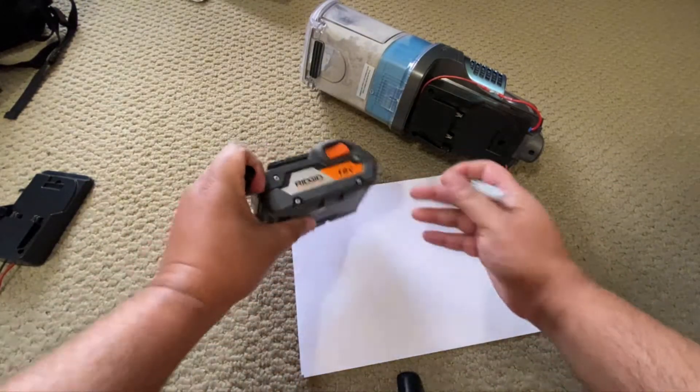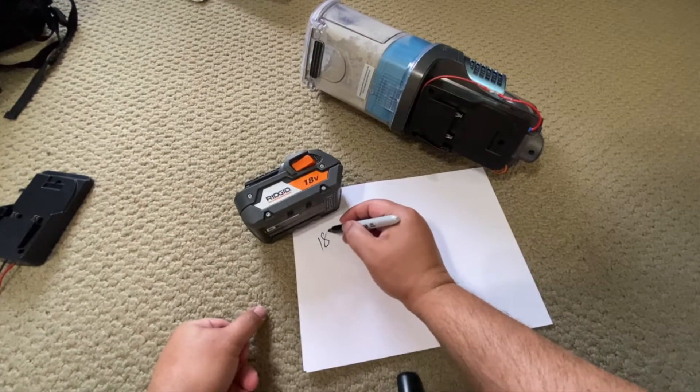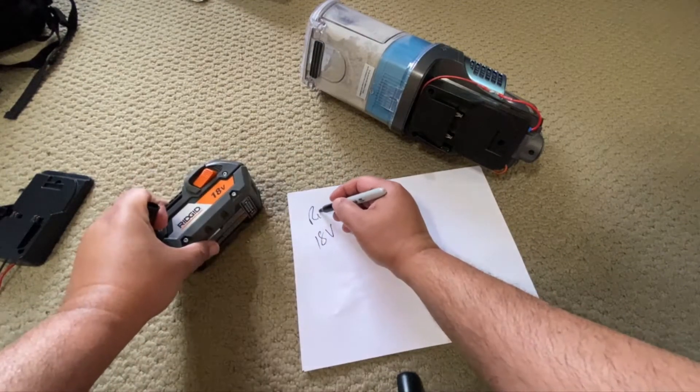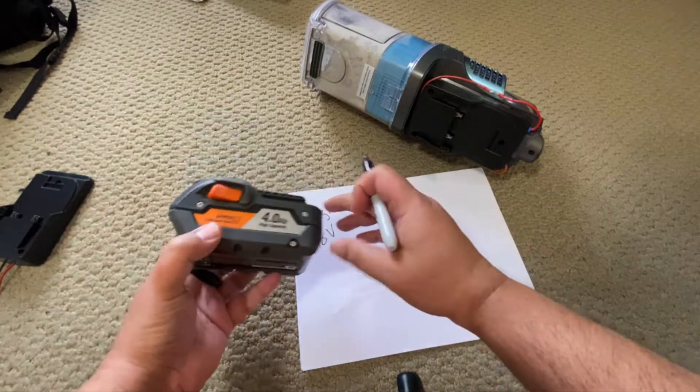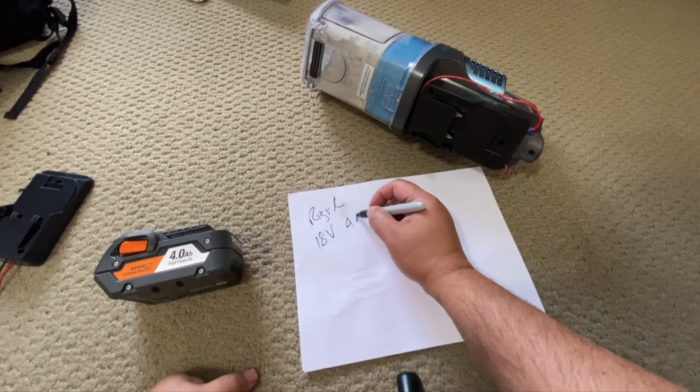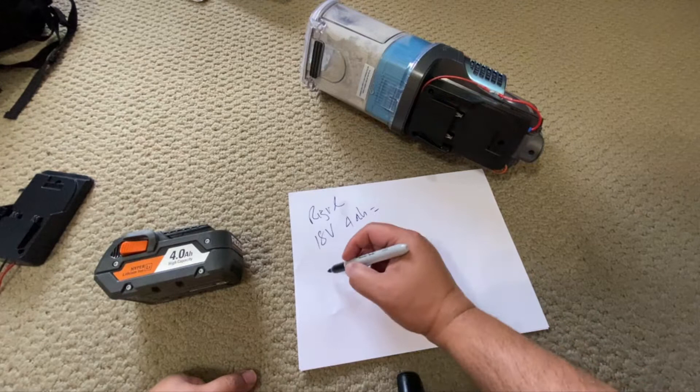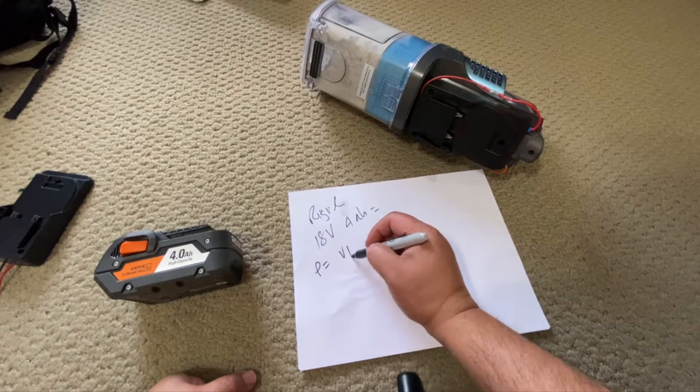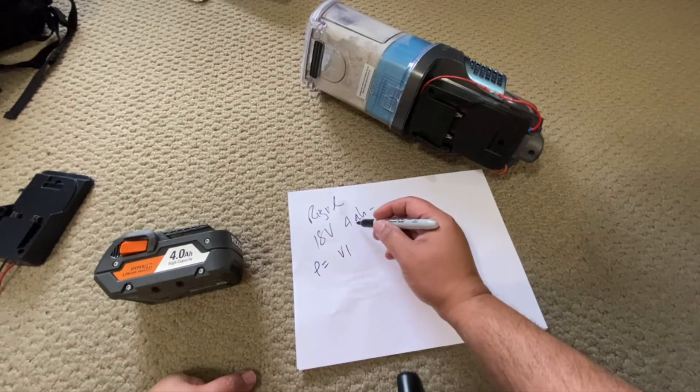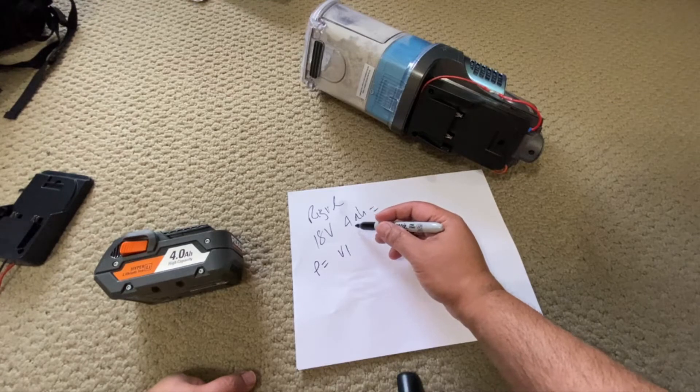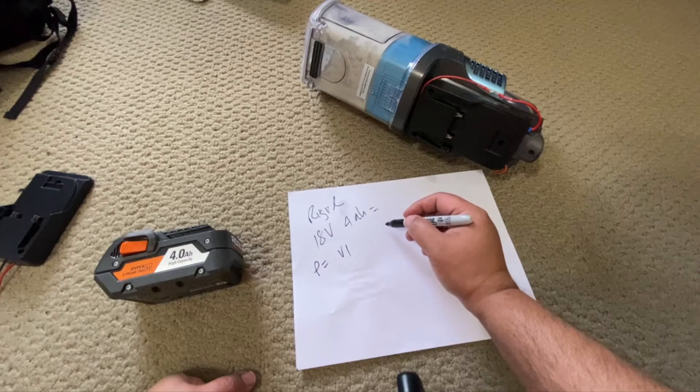So the Rigid is 18 volts, and it is 4 amp hours. Power equals V times I, which is the volt times the current, so this is 72 watt hours. That's the power coming out of the Rigid.